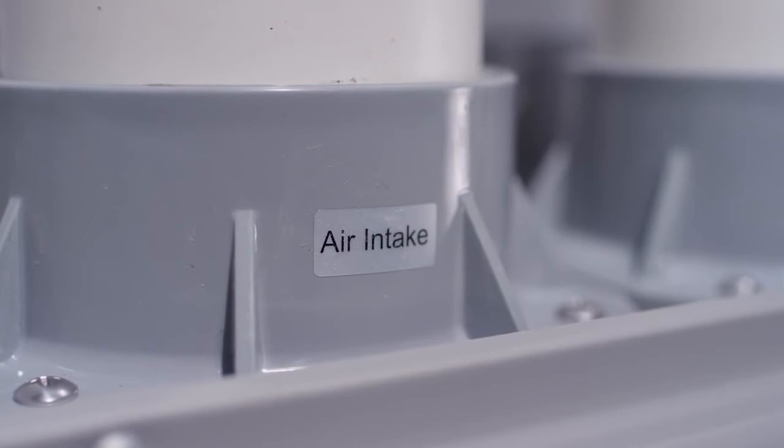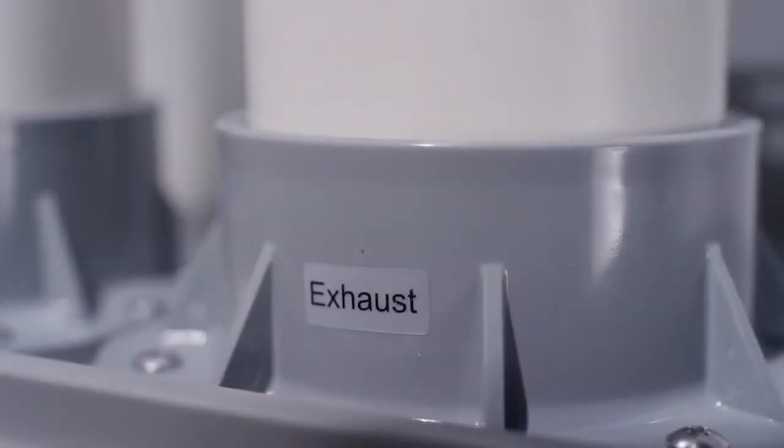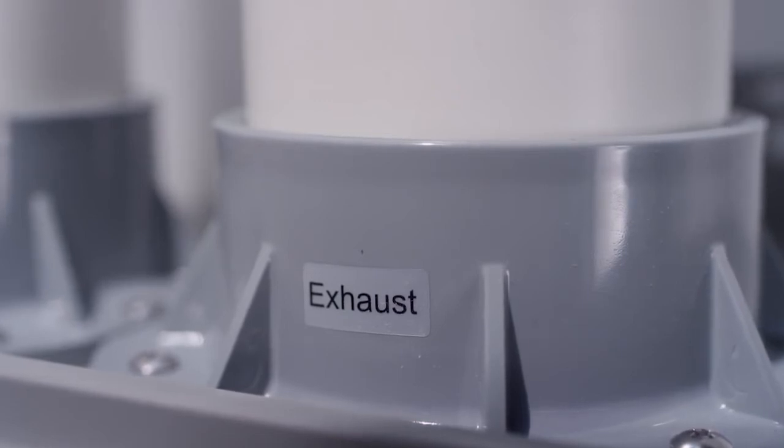Disassemble and clean each fitting and vent length so they are smooth and free of debris from the cutting process. Starting at the water heater, glue the pipe and fittings together. Ensure each joint is sealed and tight.